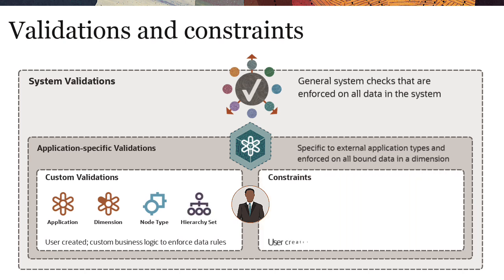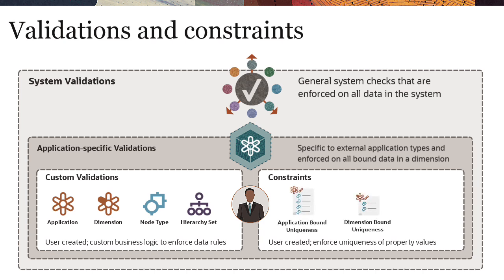Constraints are user-created at the application level to enforce uniqueness of property values. Constraints check that the specified property has unique values across either all the bound node types in the application, a selected dimension, or across specified node types, bound or unbound.